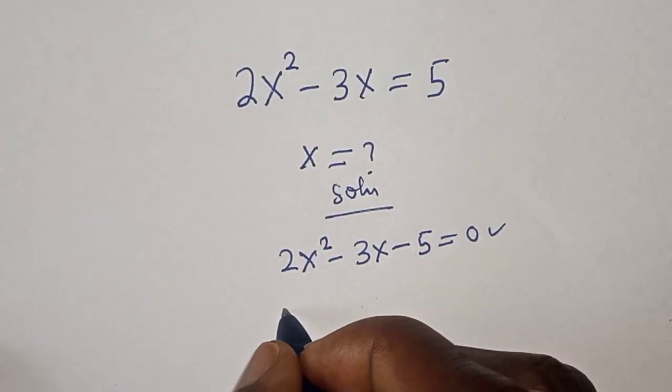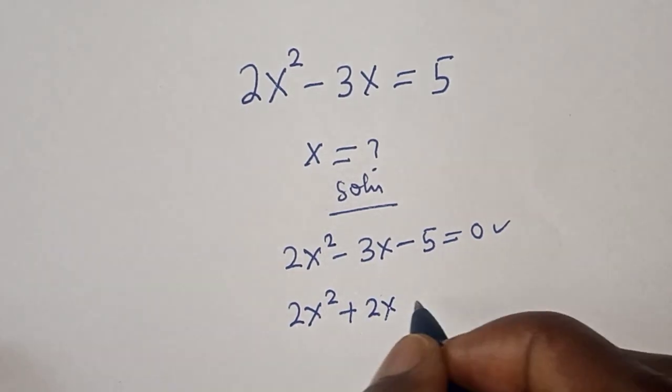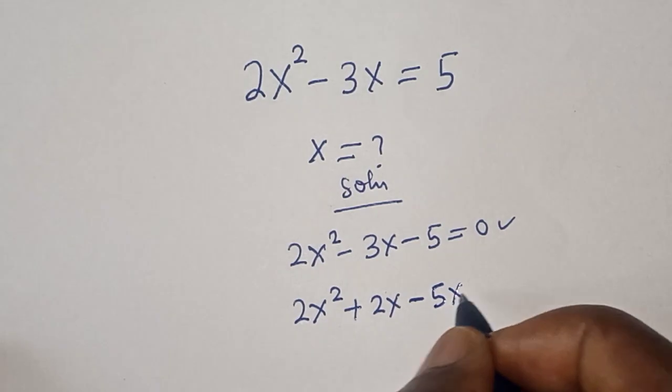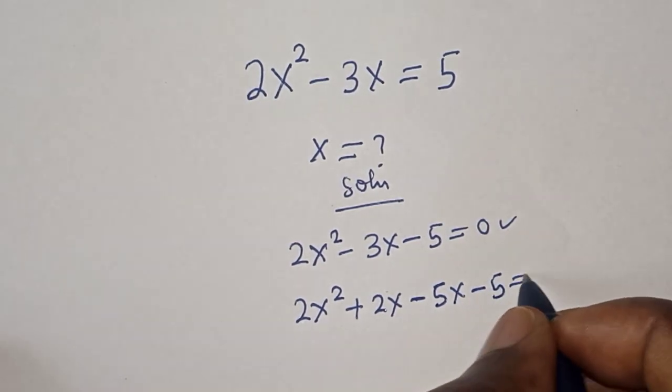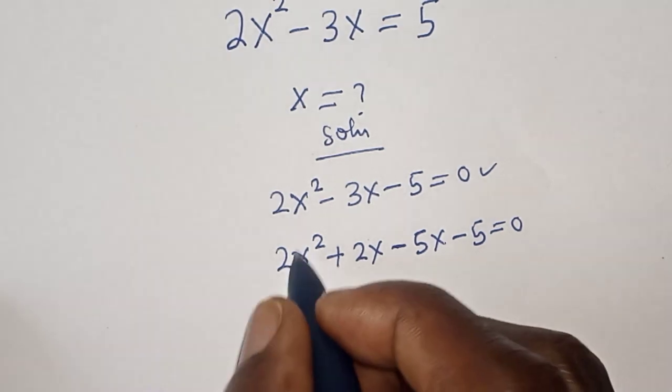This becomes 2x² + 2x - 5x - 5 = 0. 2x is common.